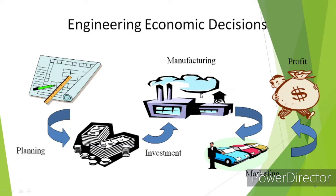Once you are successful in manufacturing, you come along with your product. In the marketing phase you can sell your product — for example, you can sell the cars you have already manufactured. Once you manufacture and sell your product you will get profit, and this profit should be more than your investment. This is actually the engineering economic decision process.